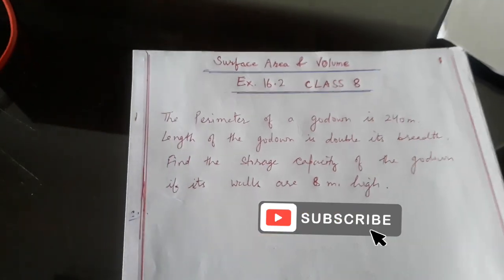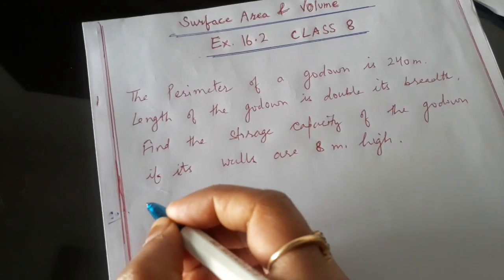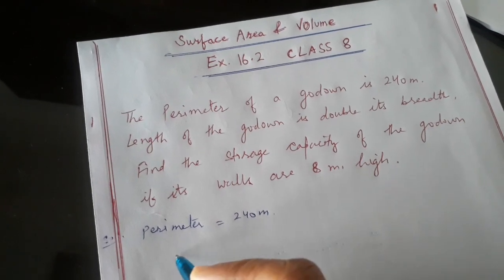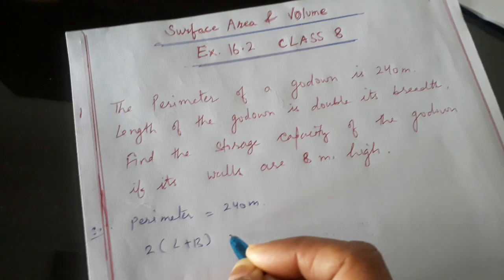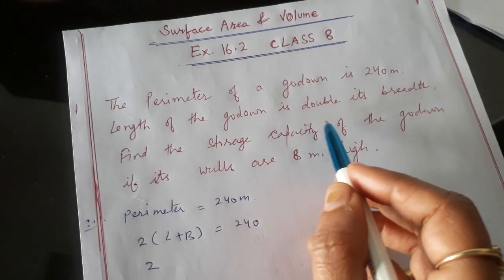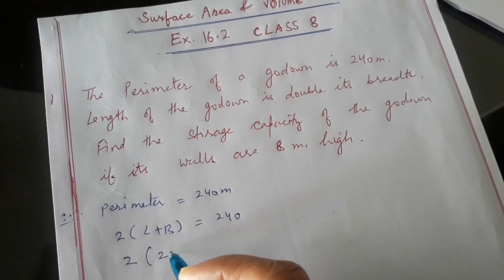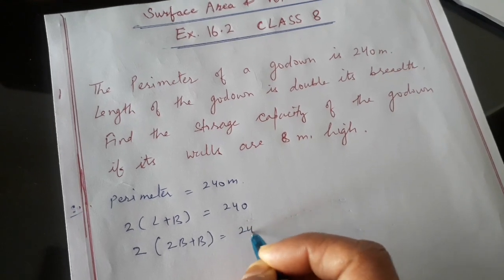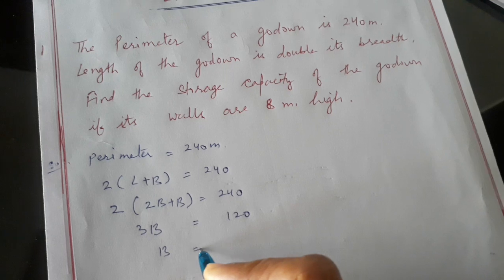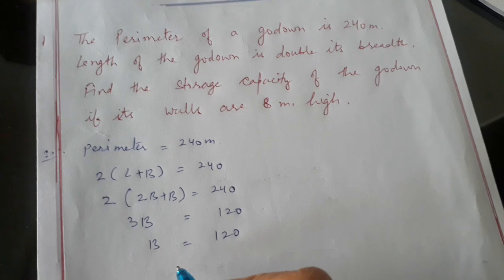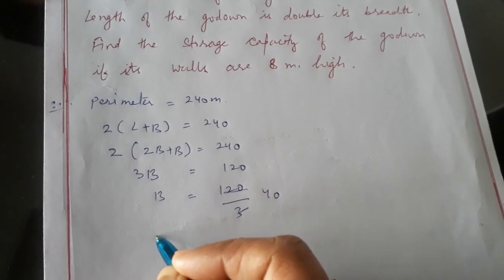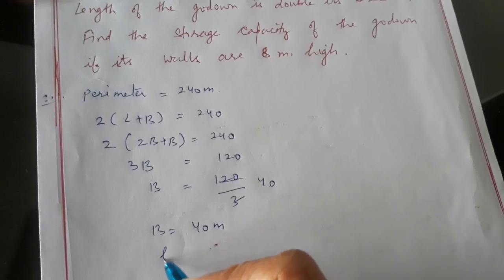So first we will write the solution. Perimeter is given to us as 240 meters. Perimeter equals 2(l + b), which is 240 meters. As it is given that the length of the godown is double its breadth, we can write length as 2b. So 2(2b + b) = 240, which becomes 3b = 120, so breadth equals 40 meters and length equals 80 meters.